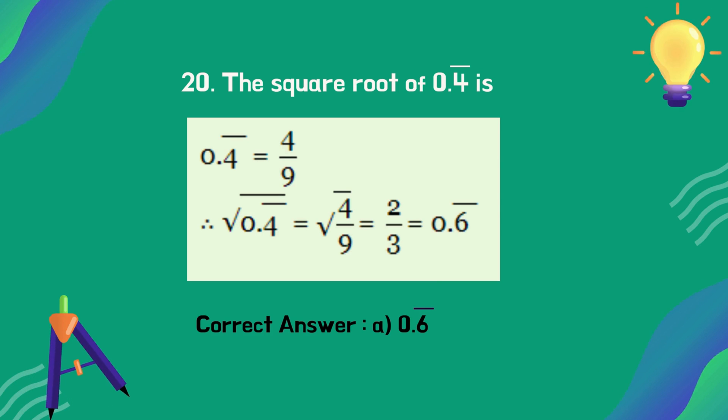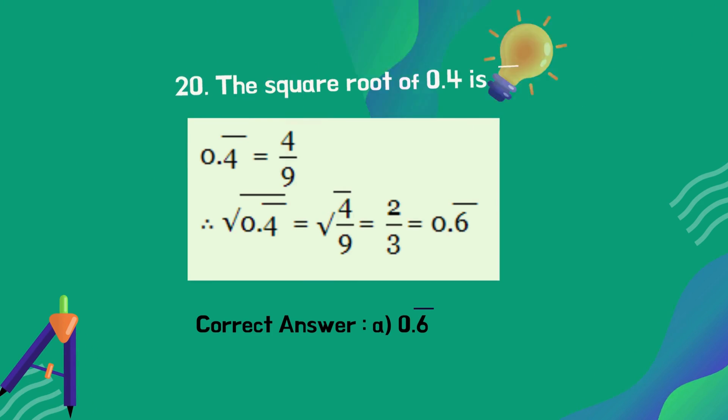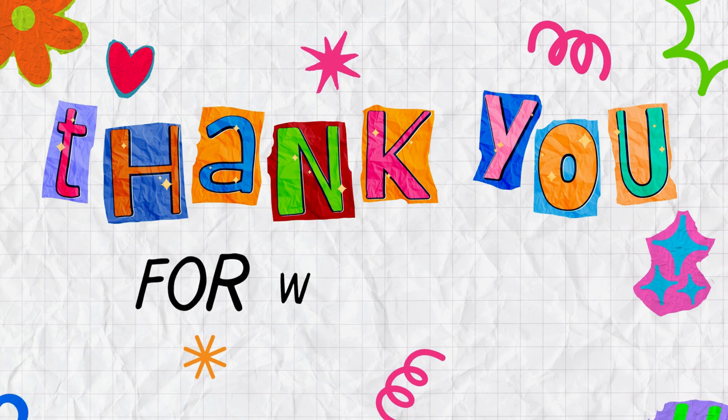What is the square root of 0.4̄ (0.4 repeating)? The correct answer is option A: 0.6̄ (0.6 repeating).